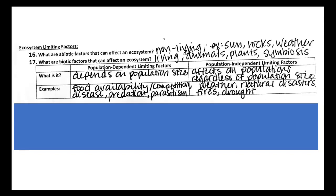Population dependent limiting factors are going to be limiting factors that affect a particular species depending on the population size. And an example of that would be disease. So if you have a disease that is infectious, it will go through more densely populated areas really quickly.